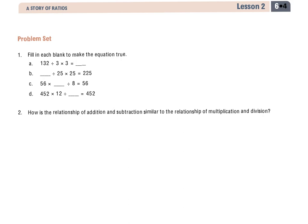For the directions, it says fill in each blank to make the equation true. So we'll start with A, and I see I have 132, and then I want to divide it by 3. So I'm going to partition this into three spots, and so I have three different sections. That's it right there, 132 divided by 3.